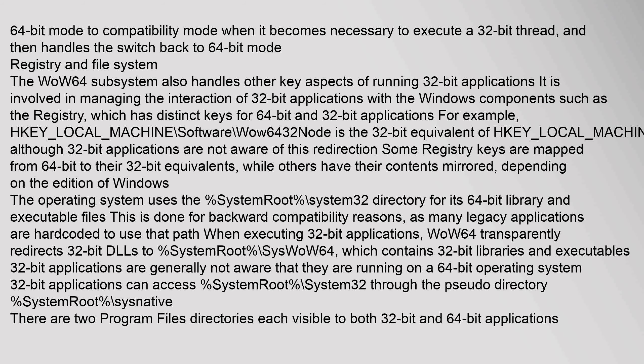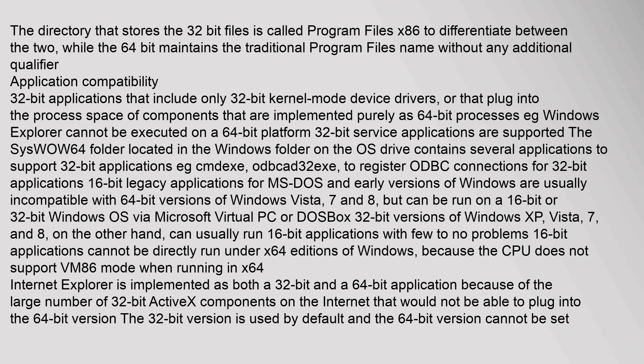The operating system uses the %SystemRoot%\System32 directory for its 64-bit library and executable files, done for backward compatibility reasons as many legacy applications are hard-coded to use that path. When executing 32-bit applications, WOW64 transparently redirects 32-bit DLLs to %SystemRoot%\SysWOW64, which contains 32-bit libraries and executables. 32-bit applications can access %SystemRoot%\System32 through the pseudo directory %SystemRoot%\Sysnative. There are two Program Files directories: the 32-bit files directory is called "Program Files (x86)", while the 64-bit maintains the traditional "Program Files" name.